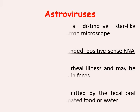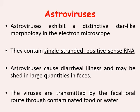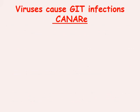The third group is Astroviruses. Astroviruses exhibit a distinctive star-like morphology in the electron microscope — this star-like appearance gave them their name 'astro'. They contain single-stranded positive-sense RNA and are non-enveloped, just like norovirus. Astroviruses cause diarrhea and may shed in large quantities in feces. The viruses are transmitted by the fecal-oral route through contaminated food or water.